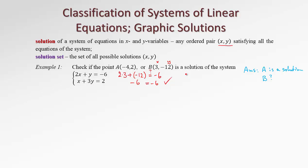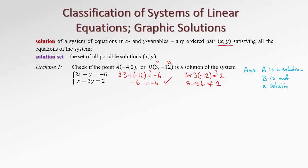What about the second equation? We have x, so it's 3, plus 3 times y, which is negative 12. Is that equal to 2? We have 3 minus 36 — it's definitely not the same as 2. So even though point B satisfies the first equation, it does not satisfy the second equation, which makes it not a solution. B is not a solution for this system of equations.